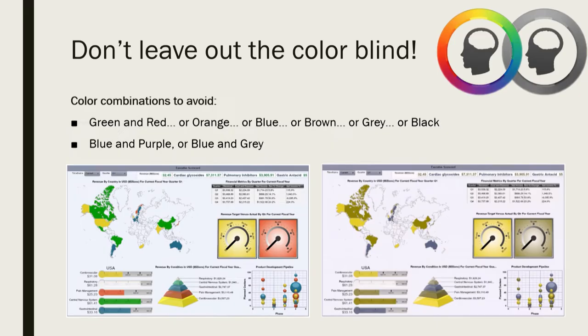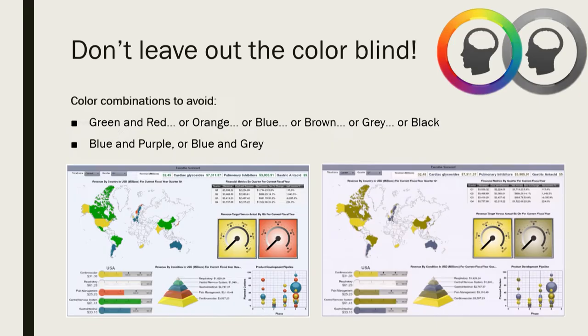A quick shout-out to the color blind — it's more prevalent than you might think. Eight percent of men and about half a percent of women have one of the many forms of color blindness. You want to make sure you're reaching the largest possible audience. There are certain color combinations to avoid — green in particular can be very tricky for folks with color blindness. There are tools online where you can pop in your data visualizations and see what they might look like to somebody with one of these deficiencies. Just make sure those greens and reds, greens and blues, greens and grays — they just turn into flat — are handled carefully.